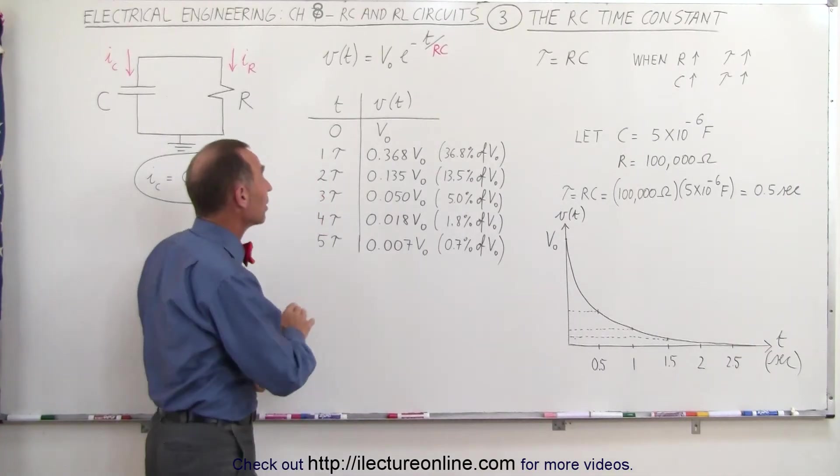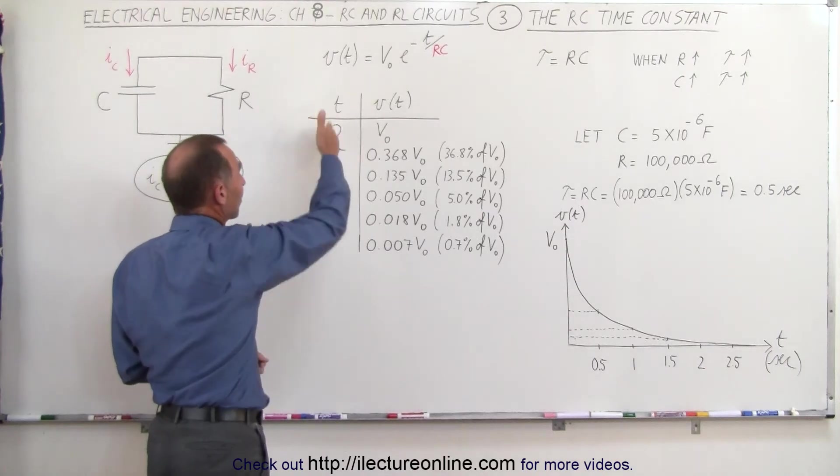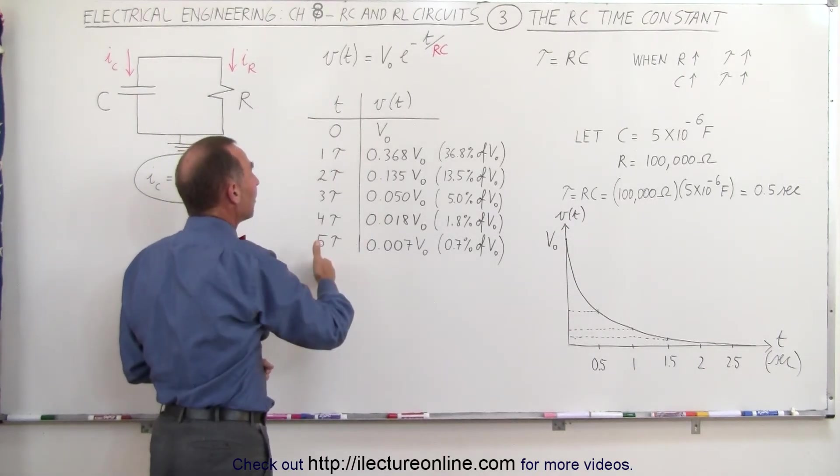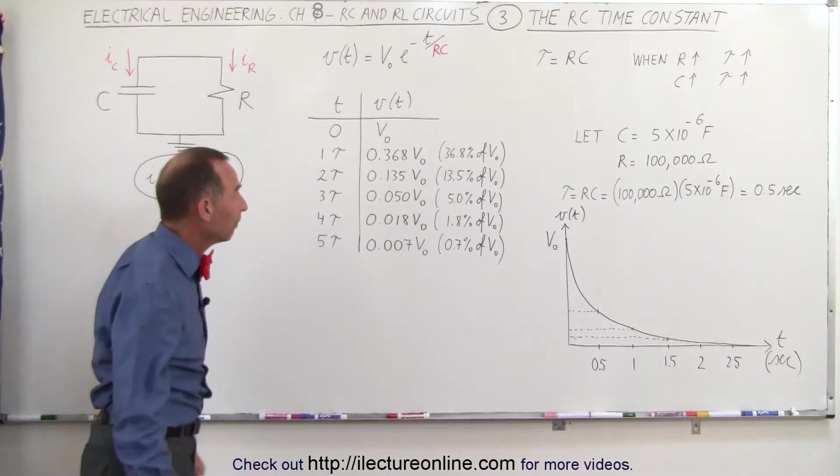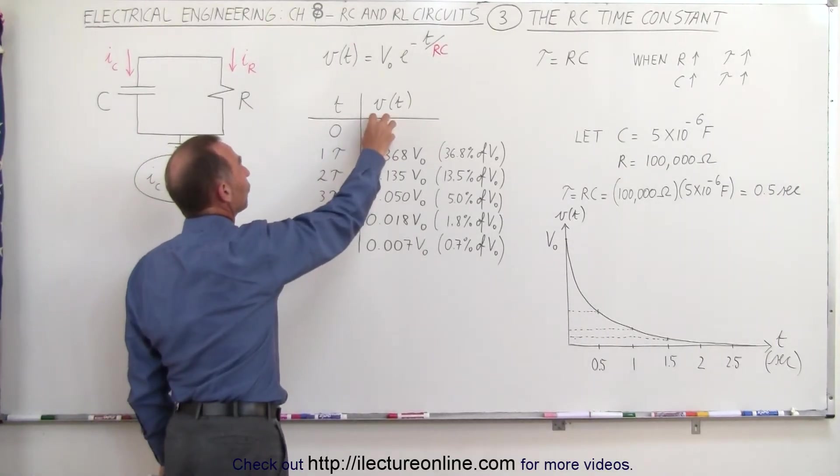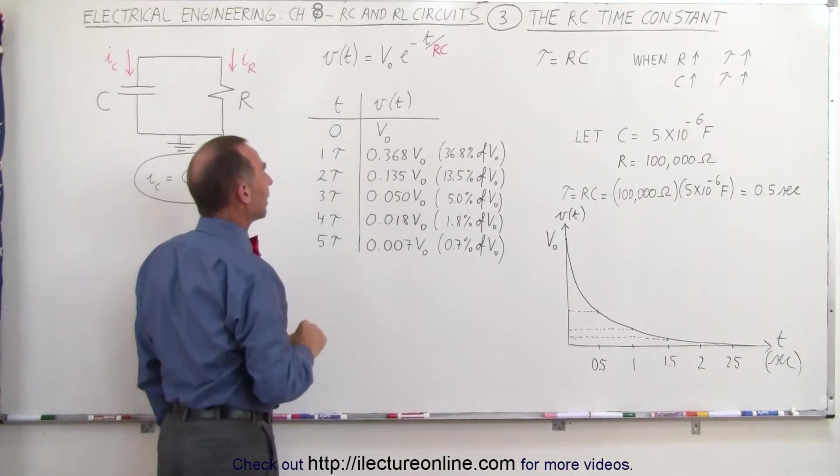To give you an example here numerically, let's say that here we have a column that represents the time elapsed and the voltage remaining on the capacitor. When time is equal to zero, it has the full voltage across the capacitor V sub naught.